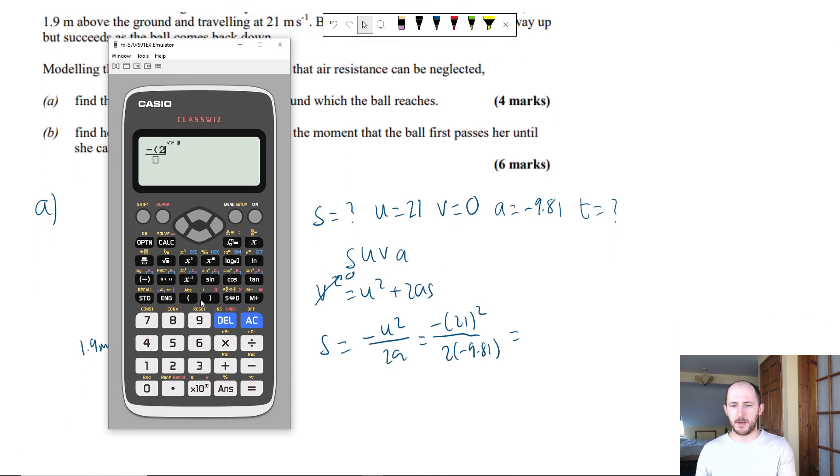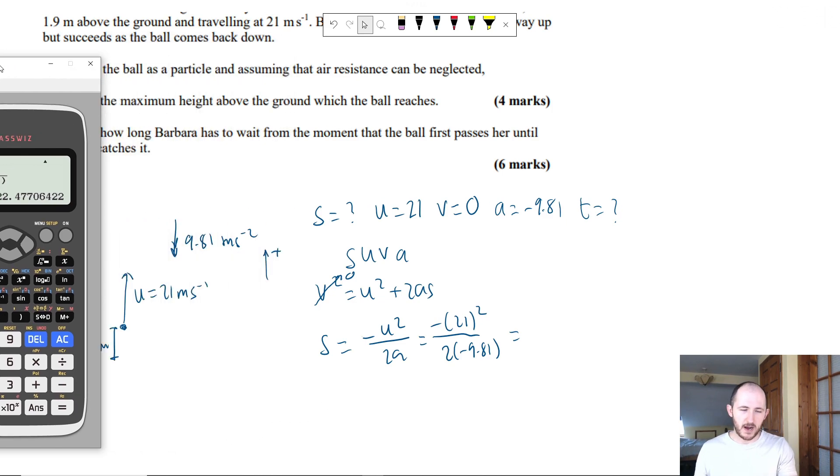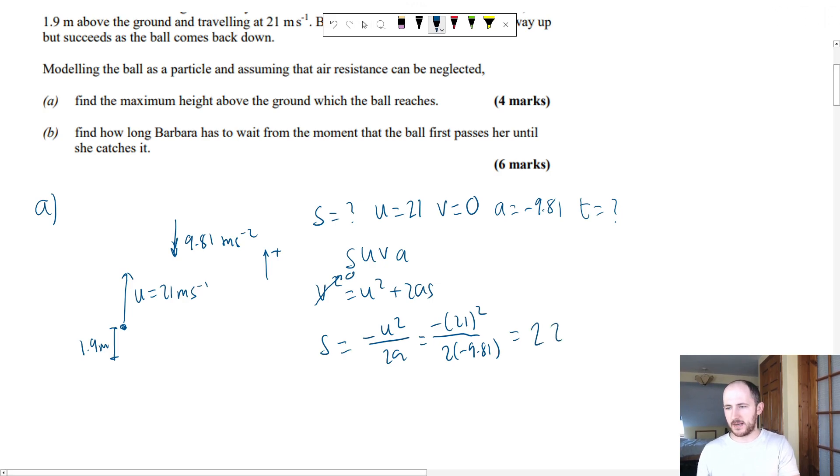But in the question, it will tell you which value to use. So really don't worry about that. And it tells me 22.5. Let's do it to 3SF just to make it a bit easier for ourselves. 22.5 meters. So the max height equals 1.9 plus 22.5. Remember, the goal here is to make the examiner's life easy. The easier their life is, the easier your life is. They can just give you marks without really thinking about it. And that is our final answer for part A.